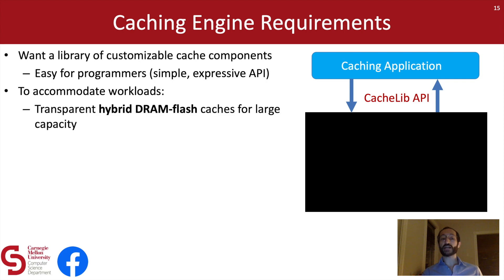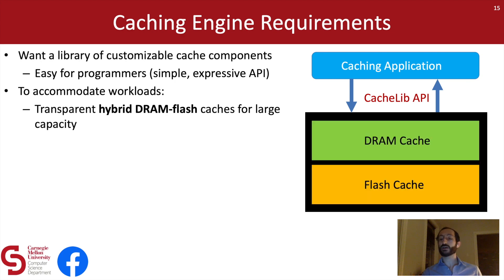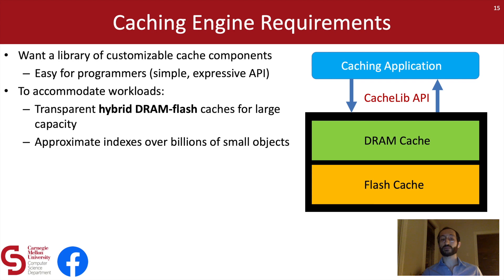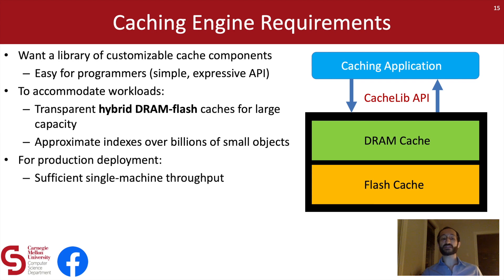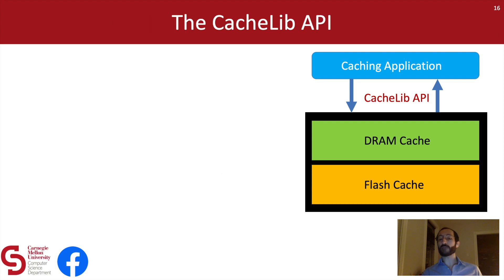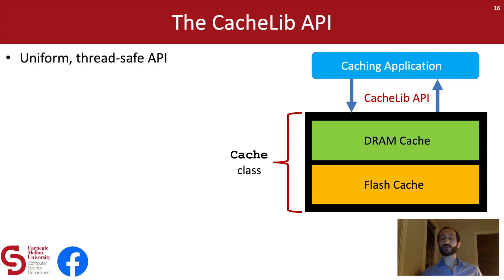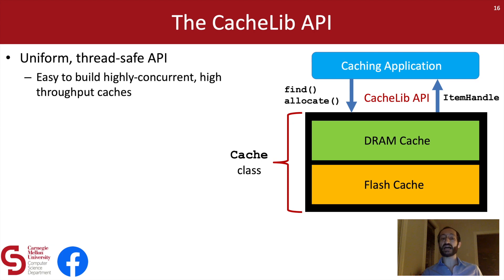To accommodate the workloads we saw before, CacheLib offers hybrid DRAM and flash caches — that is, we'll have a DRAM cache which sits in front of a large flash cache. Objects evicted from the DRAM cache can be admitted to this larger flash cache, making it easy for programmers to achieve terabyte-scale cache capacities. To maintain low overheads, we'll use approximate indexes to store billions of small objects in the flash cache. CacheLib also needs to make it easy to achieve high single-machine throughputs and offer a broad feature set. The CacheLib API provides a cache object accessed through a uniform thread-safe API, with simple methods like find and allocate that return item handle objects — basically smart pointers that provide zero-copy access to cached data.